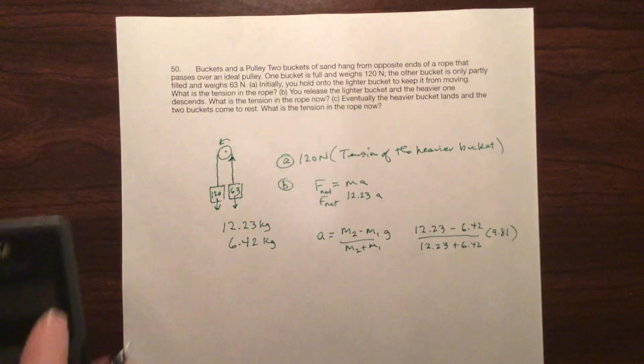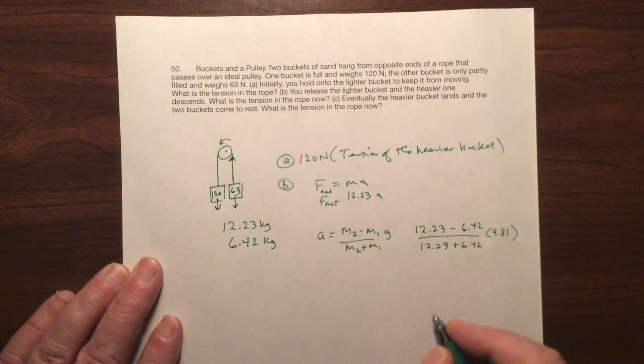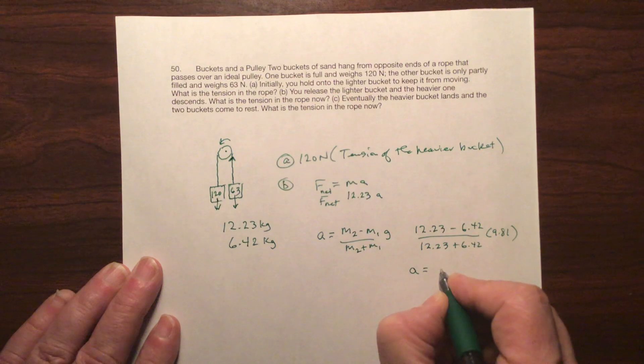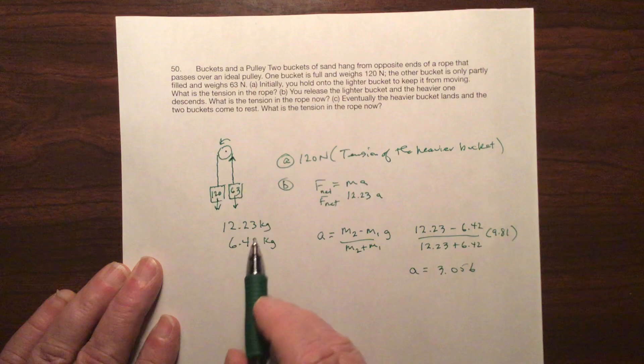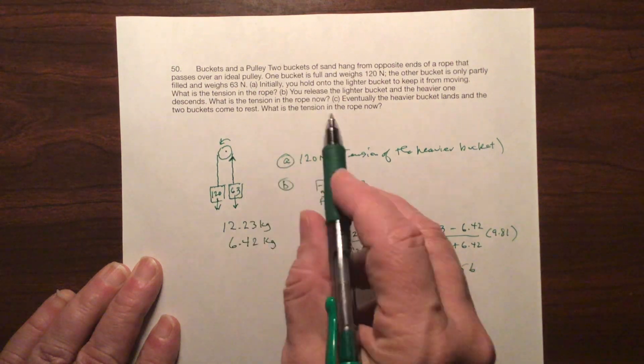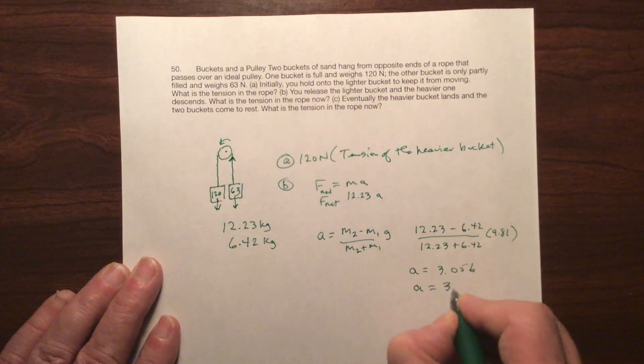So this is 12.23 minus 6.42 over 12.23 plus 6.42 times 9.81. That gives me calculator answer is 3.056. I'm going to go ahead and do two significant digits. I think all of these are in two. So let's do the acceleration as 3.1 meters per second squared.